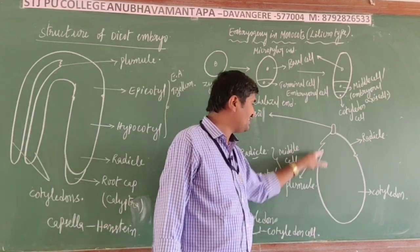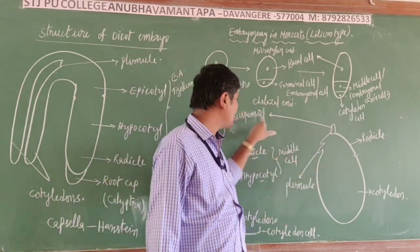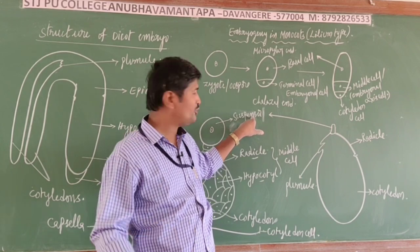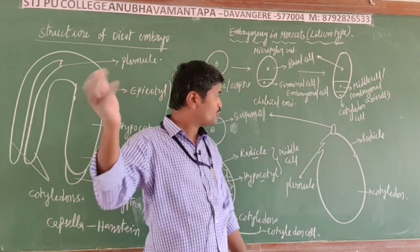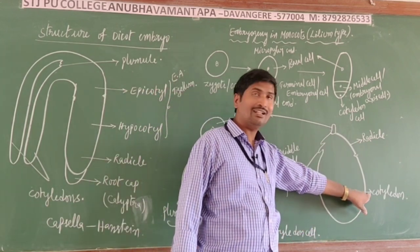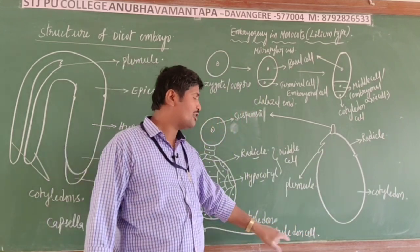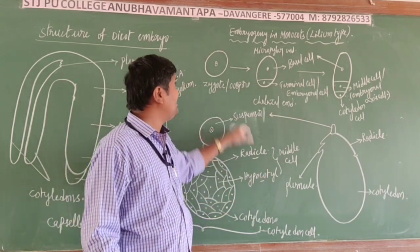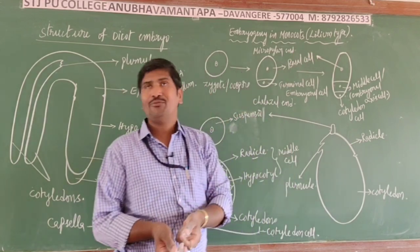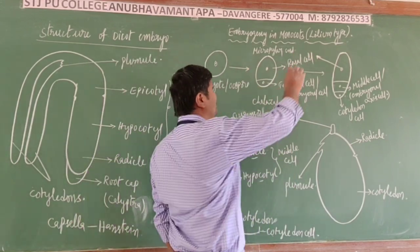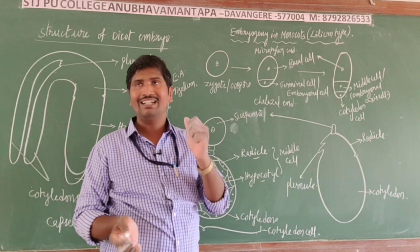The mature structure of the monocot embryo: the suspensor receives food from the endosperm; the plumule is the future shoot system; the radicle is the future root system; and a single cotyledon is developed from the cotyledon cell. This lilium type of embryogeny is commonly found in monocotyledons.